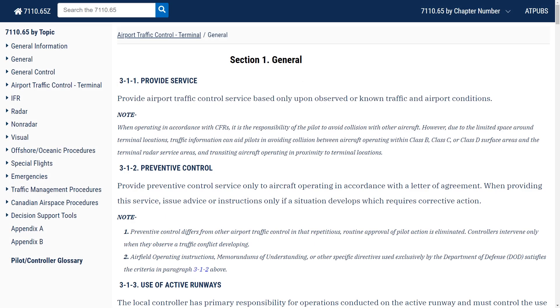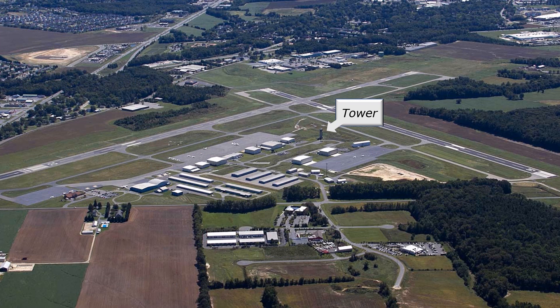The basic form of air traffic control is terminal control, providing separation services based on observed or known traffic and airport conditions. This takes place in the control tower. Small regional airports like Easton, Maryland have a control tower positioned somewhat in the center of the field, giving controllers an unobstructed view of both the airport and the surrounding area. The tower controller is responsible for landing and departing aircraft at the airport's runways. It issues pattern entry instructions for arriving aircraft, sequencing multiple aircraft to land in turns, and issues takeoff instructions to aircraft ready to depart.